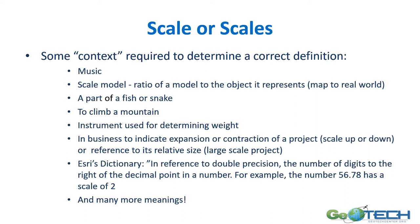In business, it gets a little confusing with the terms in geospatial technology. Business can say you're going to scale up or scale down your project, meaning you're going to expand or contract it. It can also be in reference to size — is it a large scale or small scale project? ESRI's dictionary has a reference to scale in relation to double precision: the number of digits to the right of a decimal point in a number. For example, the number 56.78 has a scale of two, and there are many more meanings for the word scale.